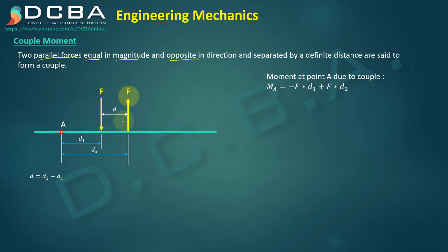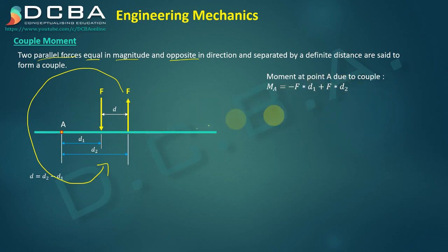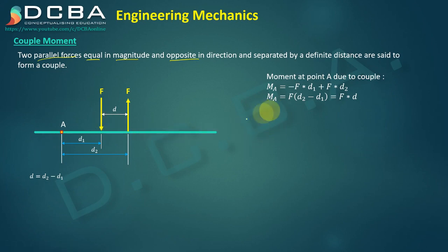Plus f times d2: the upward force, rotating about point A, rotates in an anti-clockwise manner, so the sign is positive, giving plus f times d2. Simplifying by taking f common: f times (d2 minus d1). Since d2 minus d1 equals d, the moment at point A equals f times d — that is, the magnitude of the couple force multiplied by the distance separating the couple.